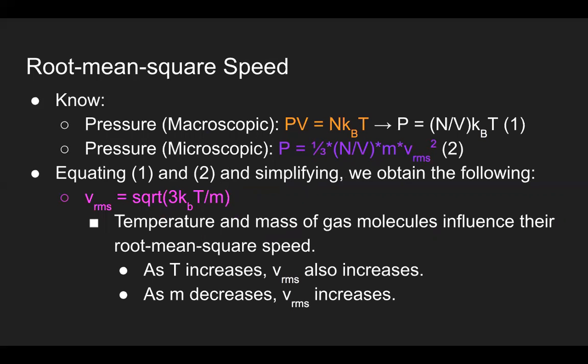Remember, we learned that the ideal gas law has two variations for the equation: PV equals NRT and PV equals NKBT. Both of these equations still relate to the macroscopic properties together. I will isolate the equation in orange for pressure, as shown by equation 1.